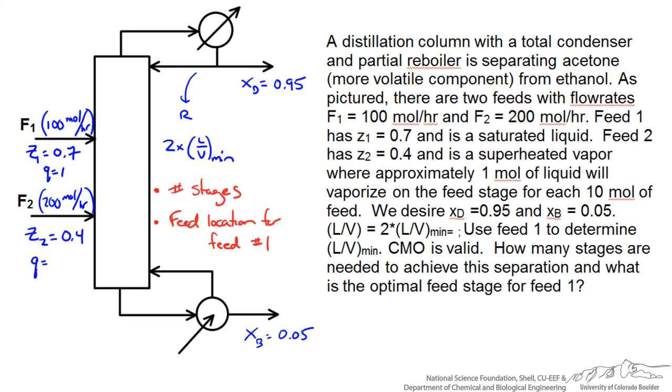At this point let us start with our approach for the problem. We are going to assume CMO since our problem statement tells us that we can. So we can designate our vapor and liquid flow rates for each of the sections. It is typical to say that our vapor in our top rectifying section is labeled as V and we have a liquid flowing back into our column as L. When we have our feed entering these flow rates could change so we are going to designate them with a prime and then below our feed 2 again they might be different so we are going to designate those with a bar symbol.